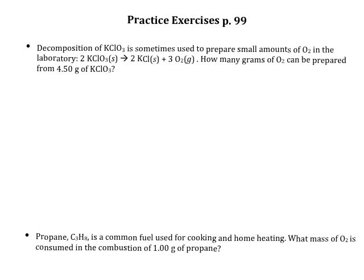Let's take a look at the first problem. We're looking at a decomposition of potassium chlorate, using that to prepare potassium chloride and oxygen. The question asks: if I start with 4.5 grams of the potassium chlorate, how many grams of oxygen can I produce? Before we do any calculations, we want to think about what our game plan is — which conversions we're performing and what information we'll need before we start with any numbers.